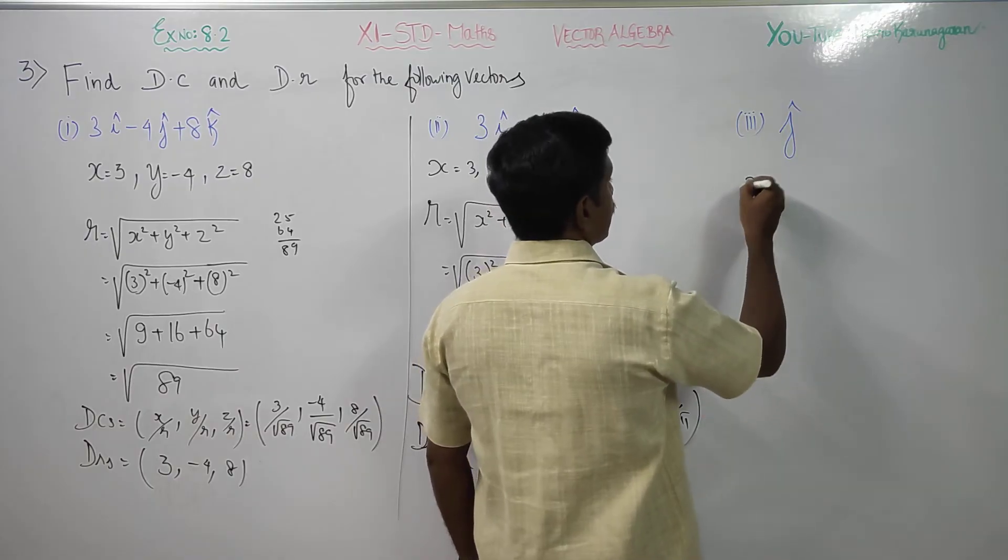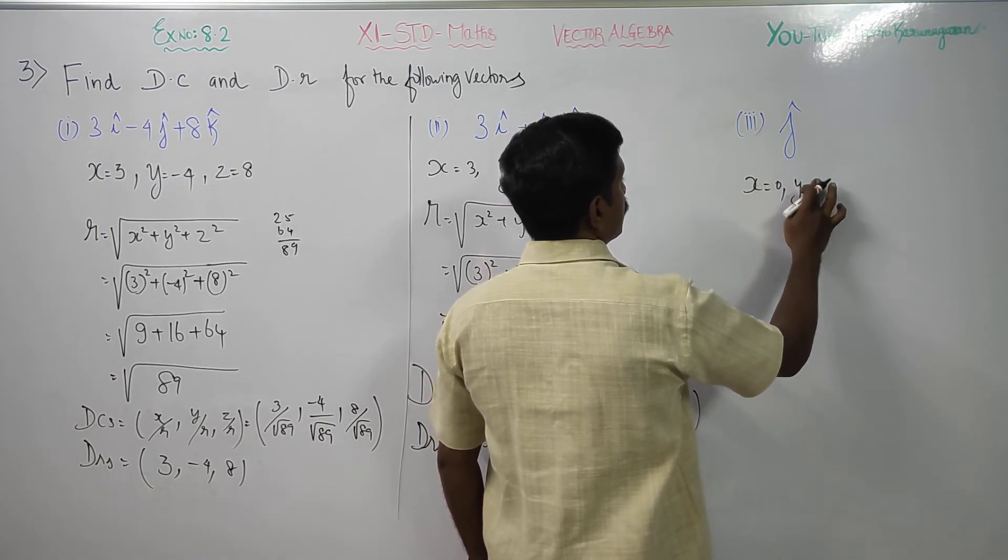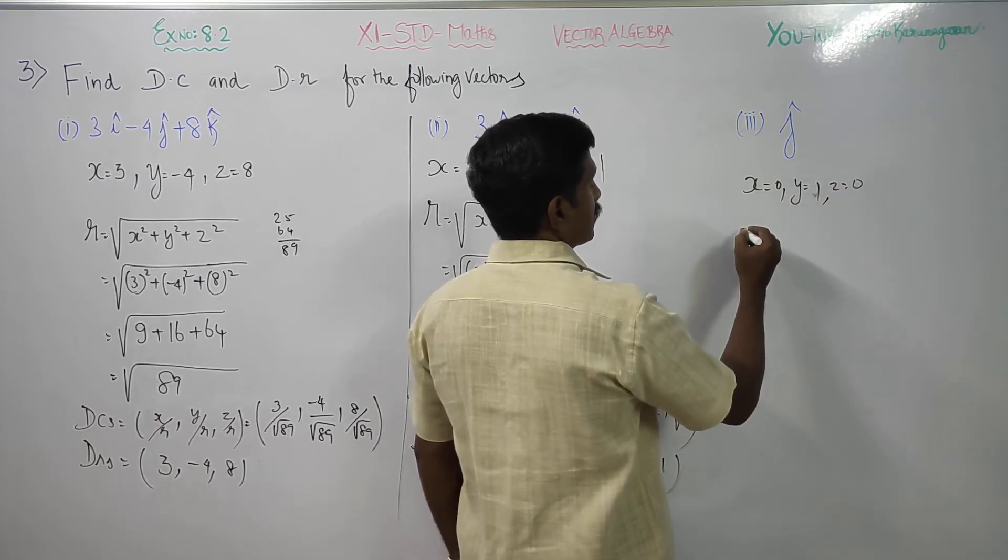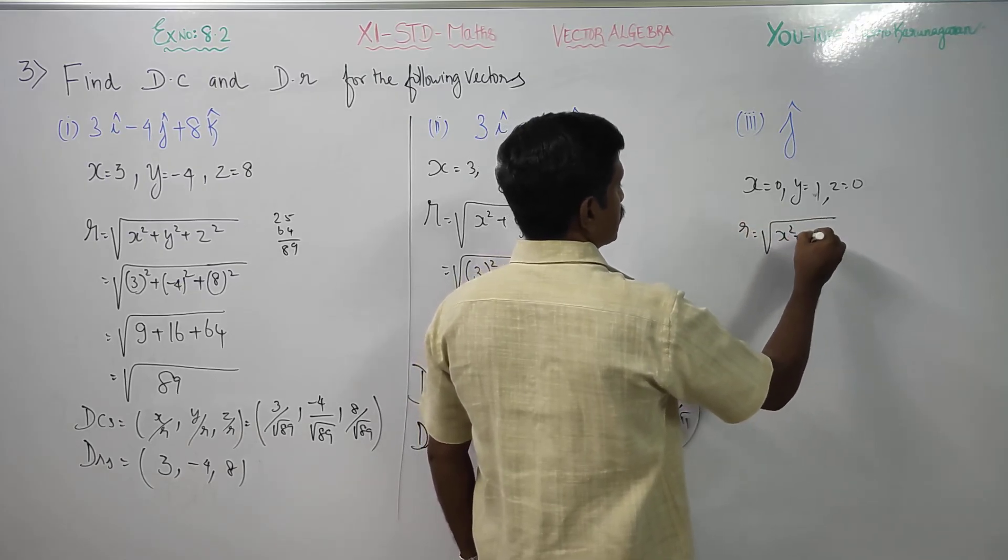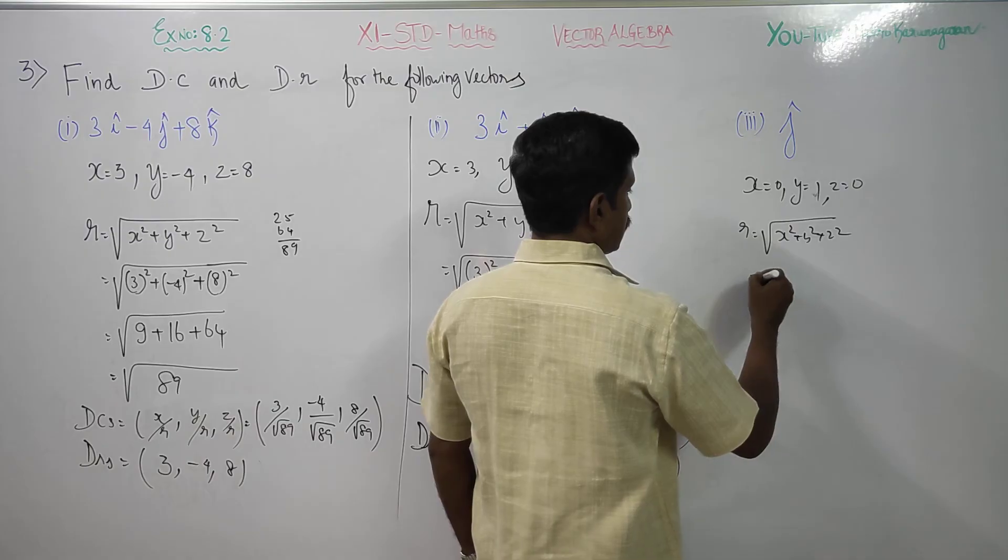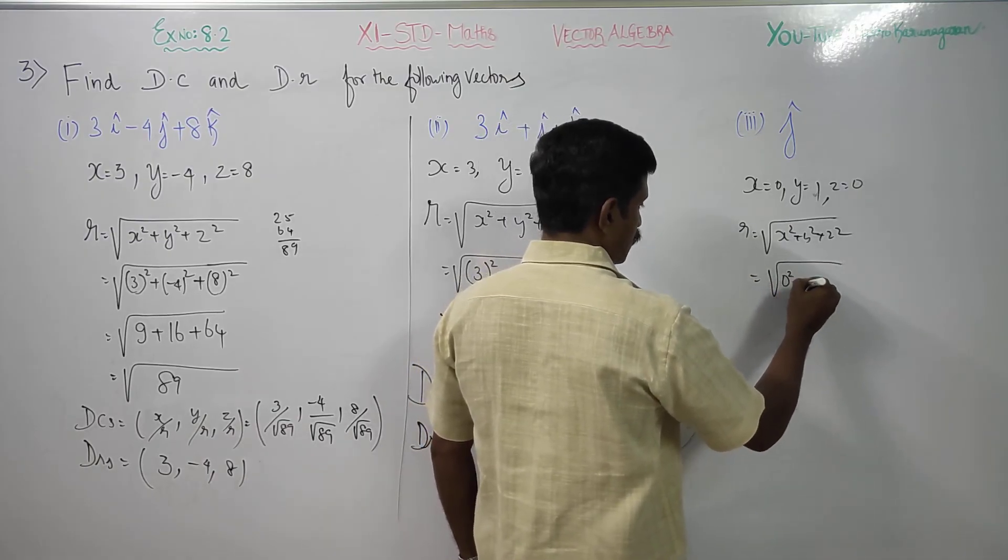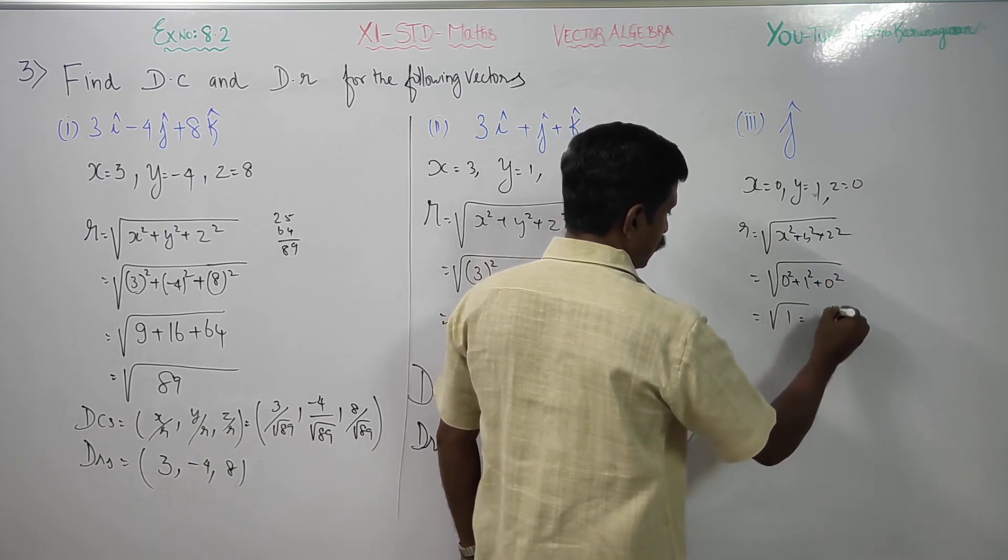j vector, my x is 0, my y is 1, z is also 0. Then finding our r, r is equal to square root of x square plus y square plus z square. x square plus y square, z square is 0 square plus 1 square plus 0 square. Therefore my answer will be root 1 and 1.